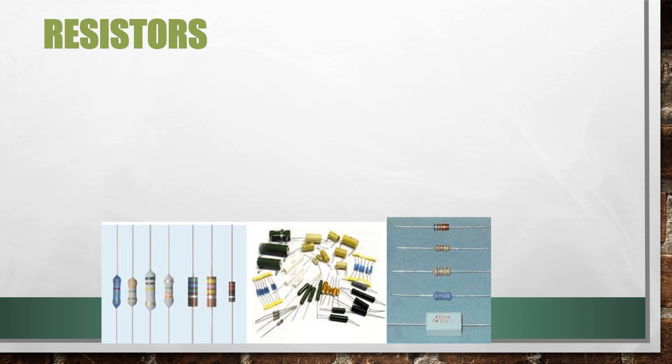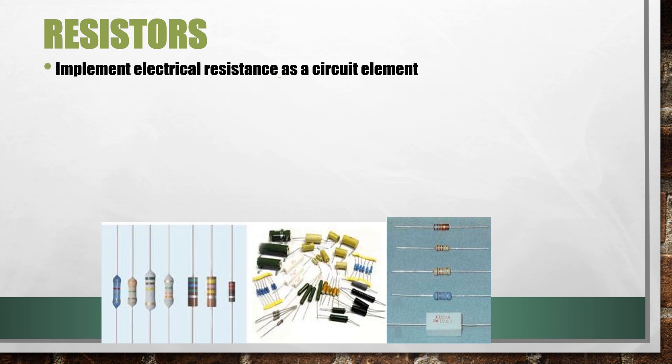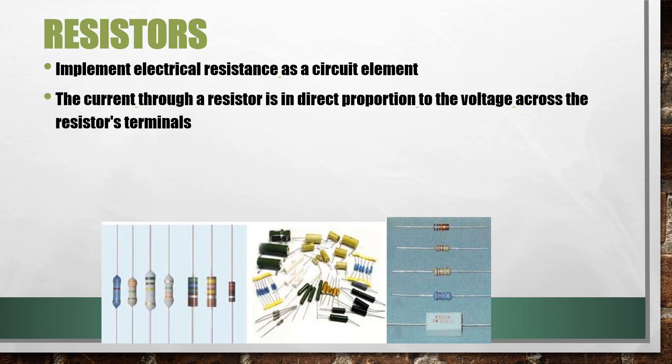What are resistors? A resistor is a passive two-terminal electrical component that implements electrical resistance as a circuit element. The current through a resistor is in direct proportion to the voltage across the resistor's terminals. This relationship is represented by Ohm's law.